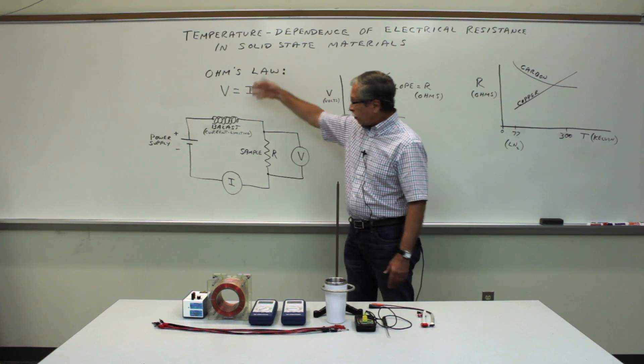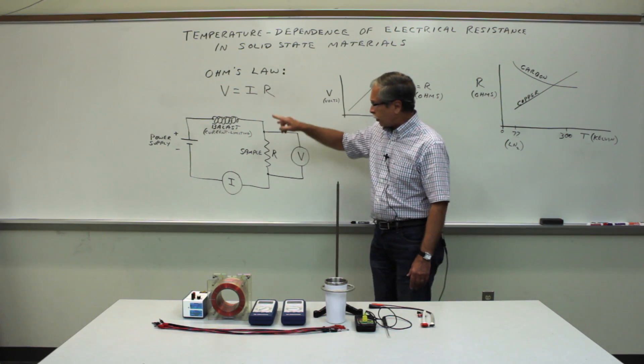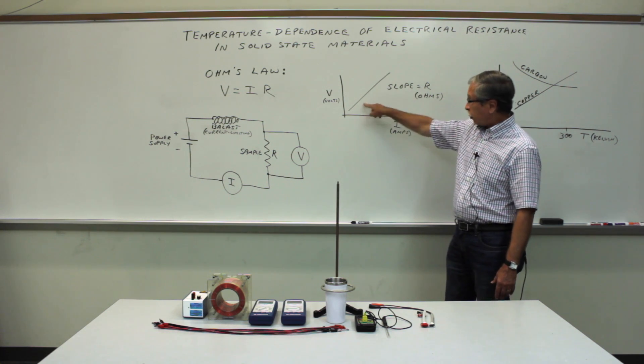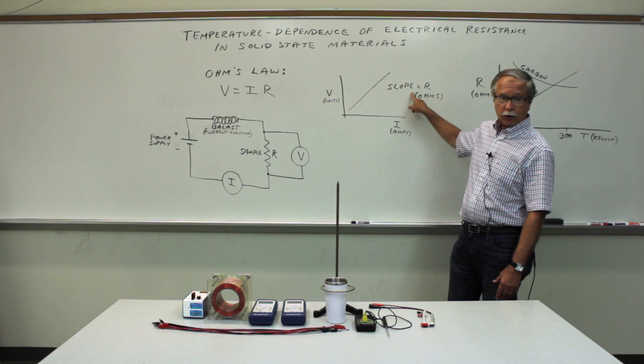In order to make measurements of Ohm's Law, what we'll want to do ultimately is to plot the voltage as a function of the current, and the slope of the resulting straight line is the resistance.